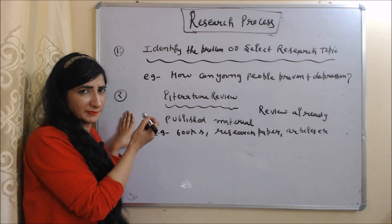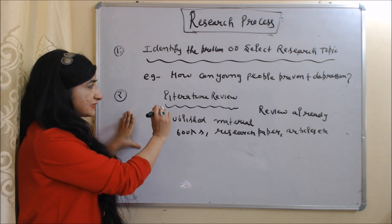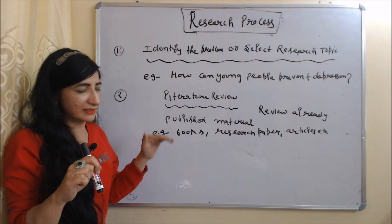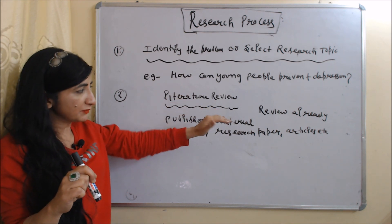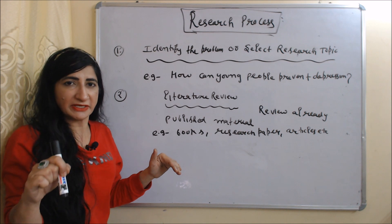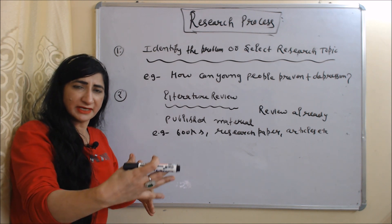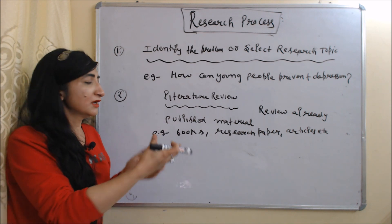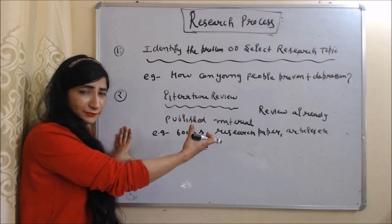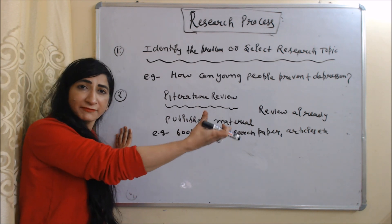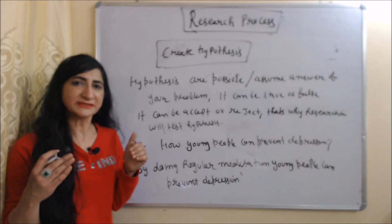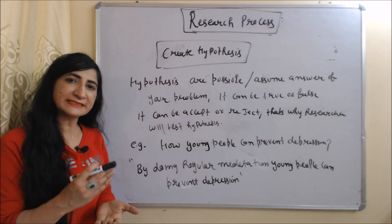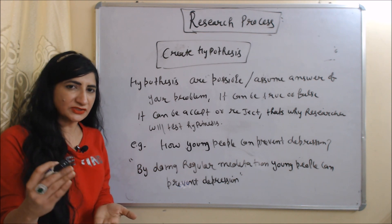The second step is literature review. Literature review means reviewing already published material related to your research topic. The third step is to create a hypothesis. A hypothesis is a possible or assumed answer to our research problem.